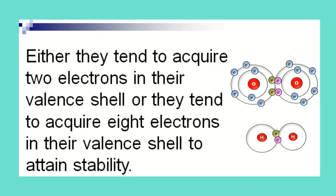Either they tend to acquire two electrons in their valence shell, or they tend to acquire eight electrons in their valence shell to attain stability.